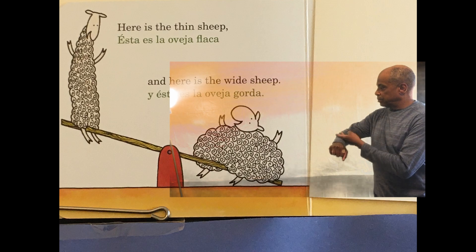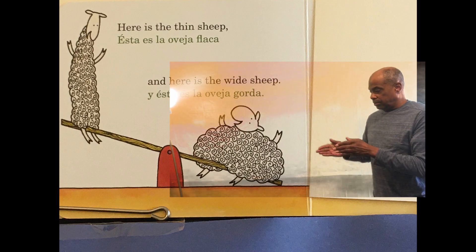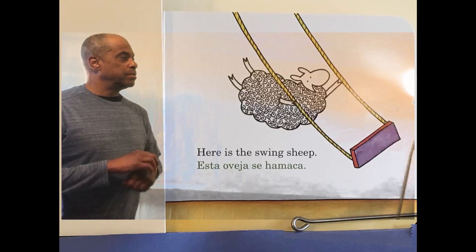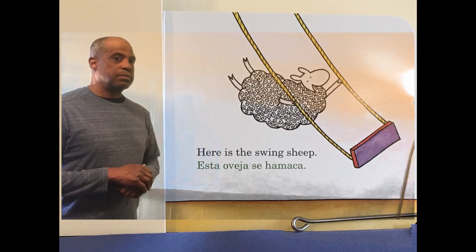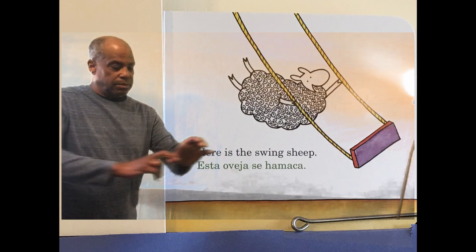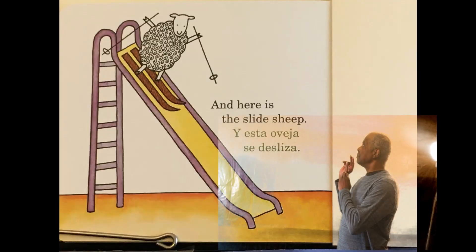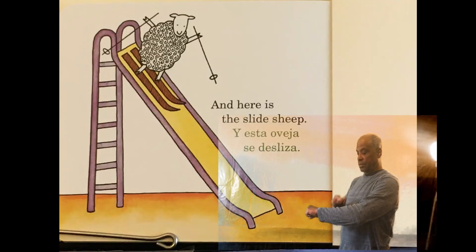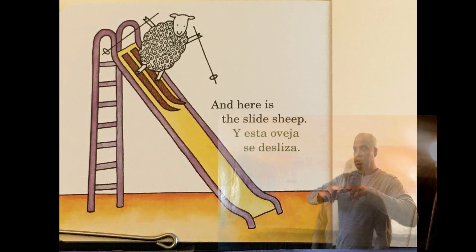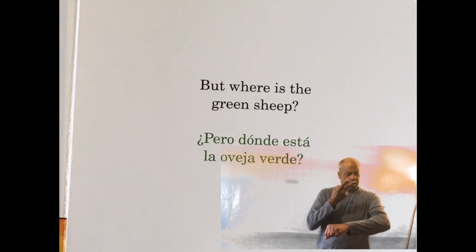Here is the Thin Sheep. And here is the Wide Sheep. Here is the Swing Sheep. And here is the Slide Sheep. But where is the Green Sheep?